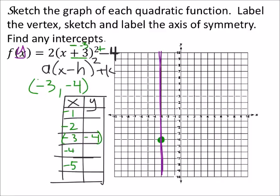So, when x is negative 2, then I've got a negative 2 plus 3, which is 1. 1 squared is 1, times 2 is 2, minus 4, negative 2. So I got negative 2, negative 2.